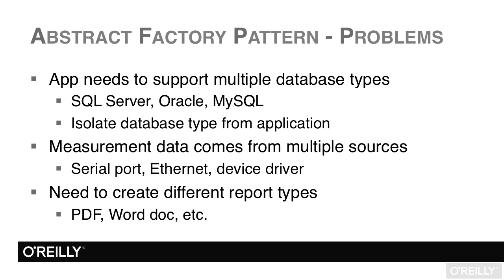Another example is we need to be able to create different report types. We might have some sort of application that exports data or graphs or charts to different kinds of documents. We don't want the application to know throughout that it's creating a Word document or a PDF document. For the most part, we want the application to create the data that the document uses and then pass it to something that creates the document itself. So we're going to use an abstract factory pattern to solve this problem of isolating these different types of database types, data sources, or document types from the rest of the application.